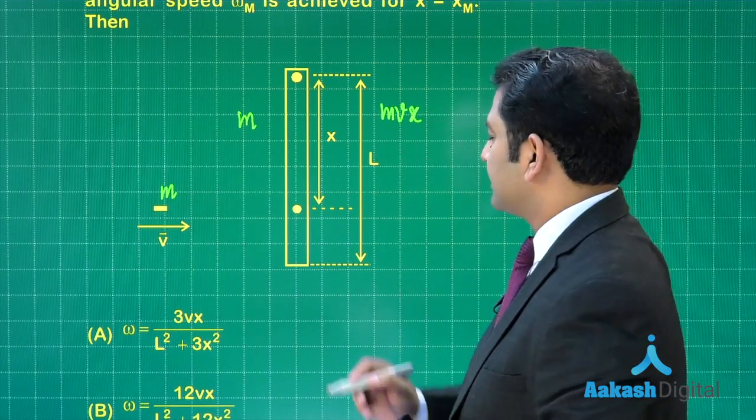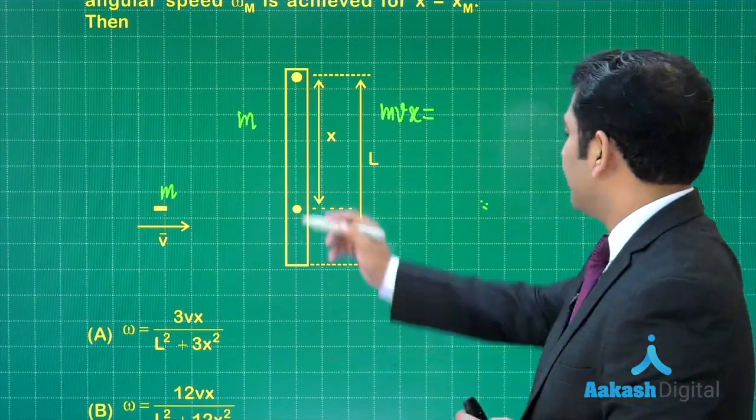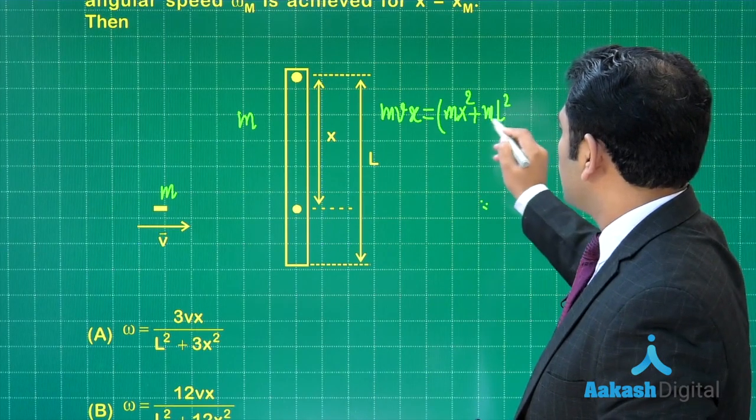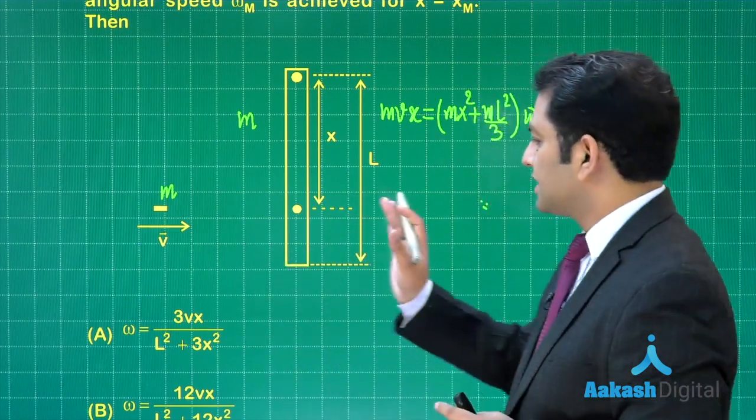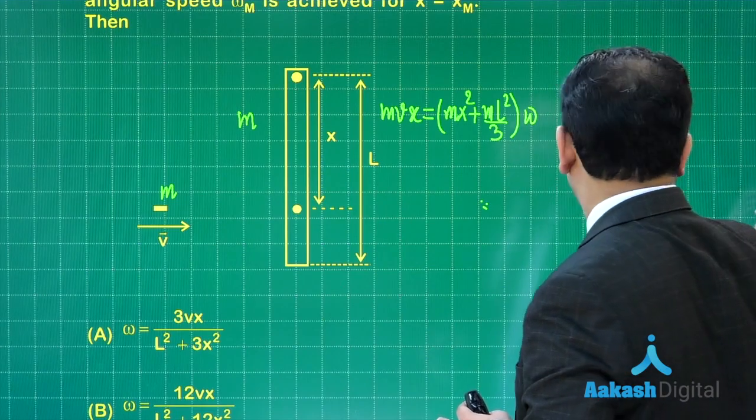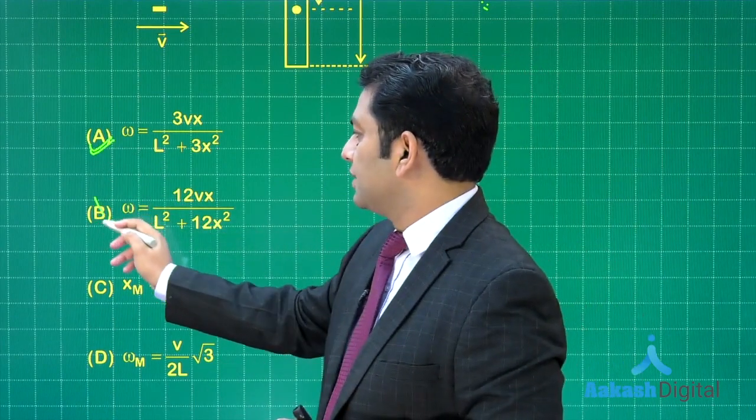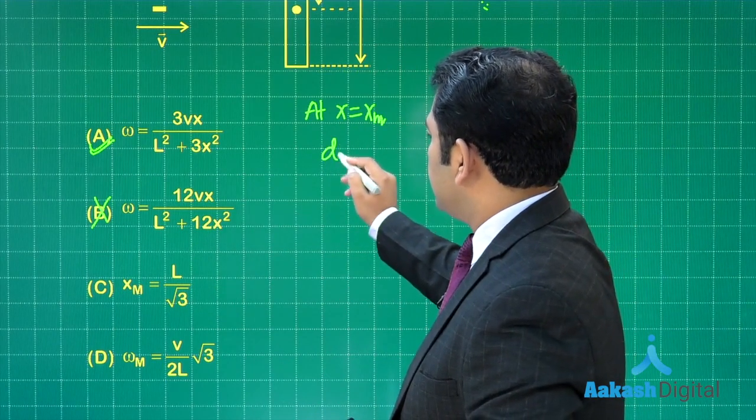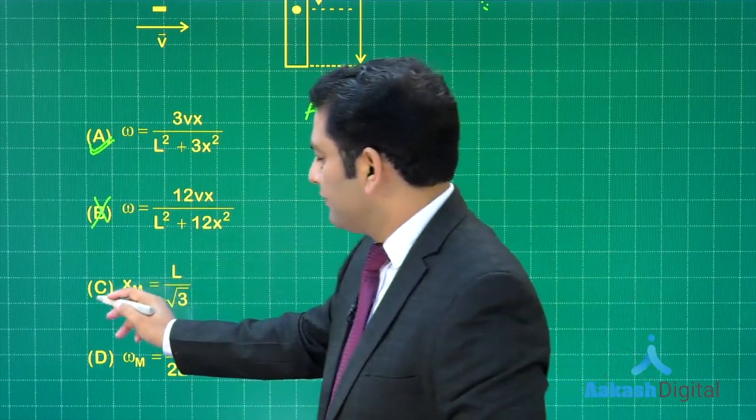If I write the angular momentum equation: mvx is the angular momentum of the bullet initially. The bullet gets embedded into the rod, so this is going to be mx² plus ml²/3 into omega. It becomes one system, and omega value—it is straightforward, it is visible—option number A is going to be the correct one. If A is correct, B would be incorrect. Now what about x_m? That is a very simple thing. At x equals x_m, dω/dx will be equals to 0, the condition of maximum. Option number C will come out to be correct.